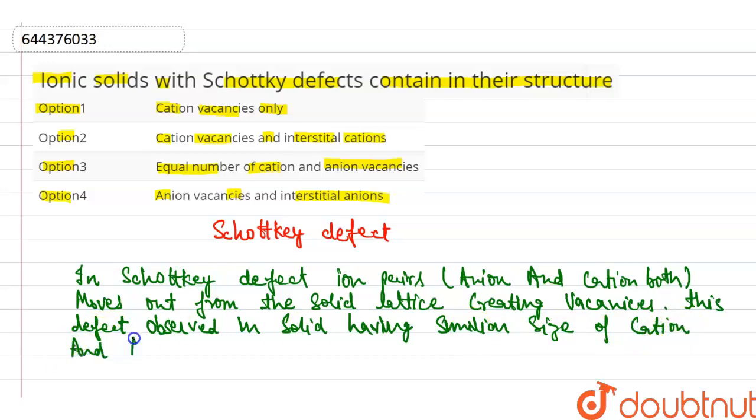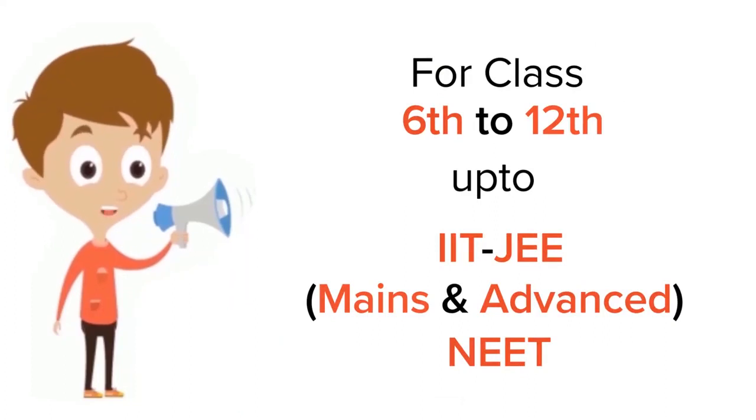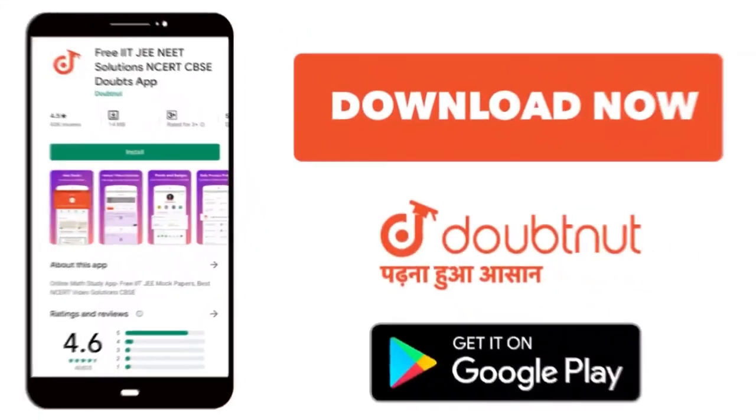So in our question asking what Schottky defects contain in their structure, it contains equal number of cations and anions vacancy, so our correct option is option number third. Thank you. For class 6th to 12th, IIT JEE and NEET level, trusted by more than 5 crore students, download Doubtnet app today.